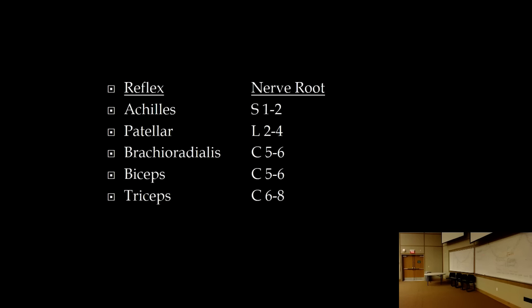The triceps reflex is listed as C8 in most review books, but recent EMG studies show very little C8 involvement — it's mainly C6 and C7. The triceps extends the arm; tapping the triceps tendon produces elbow extension. In the lower extremities, the patellar reflex assesses L2–L4 nerve roots, and the Achilles reflex assesses S1–S2.